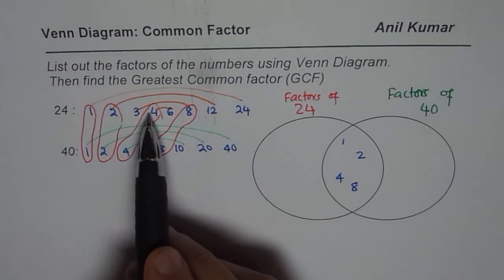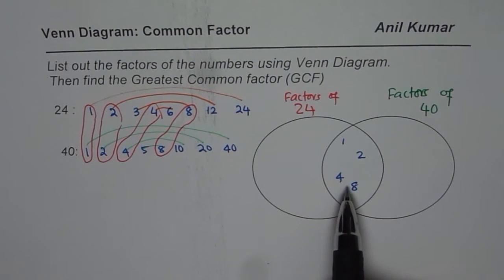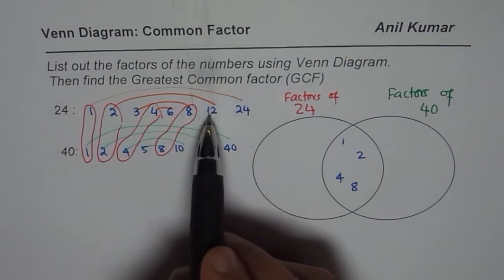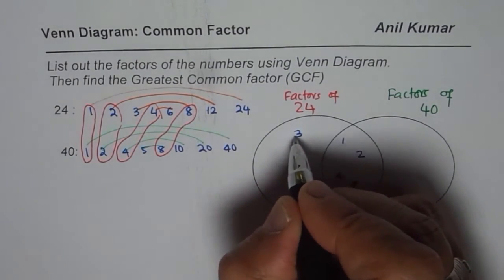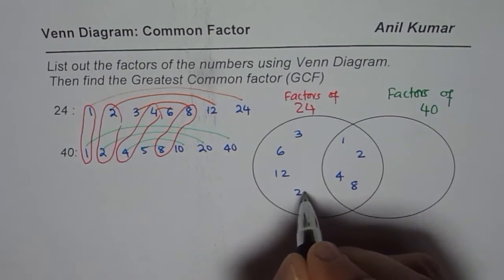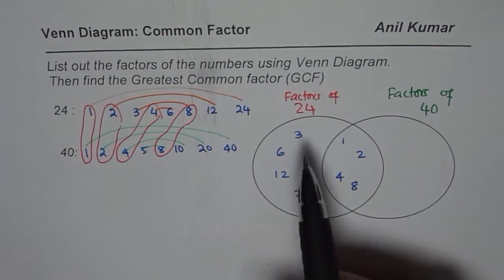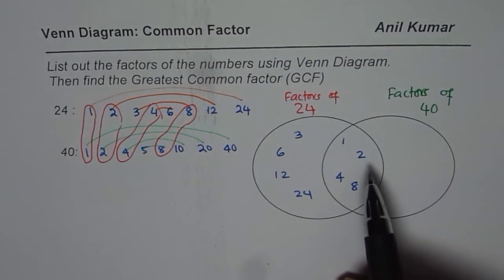So the 1, 2, 4 and 8 are already there. They are common factors. We are left with 3, 6, 12 and 24. So 3, 6, 12 and 24 are factors of 24 but not of 40. That is what we mean.